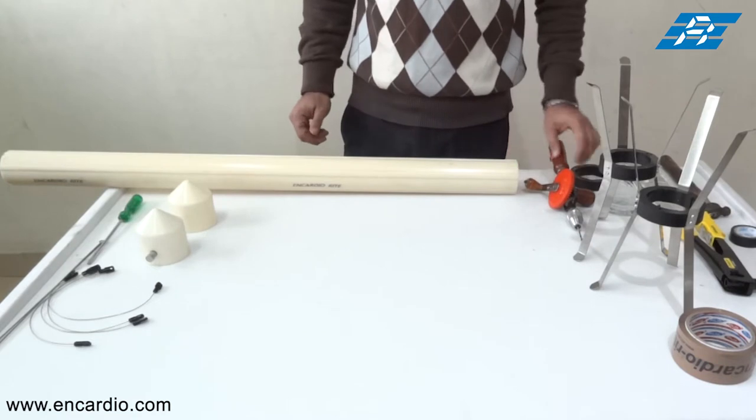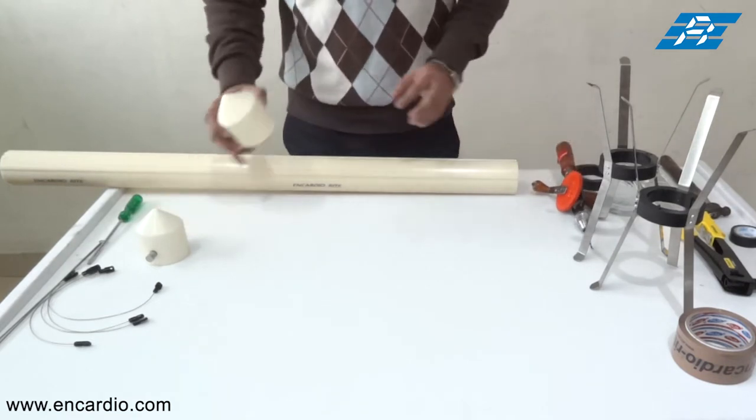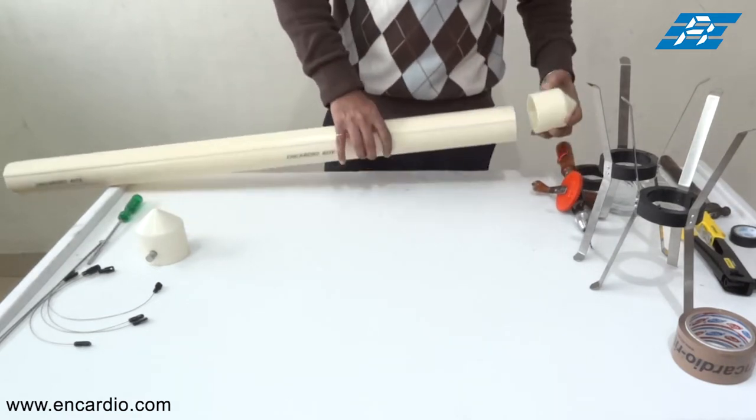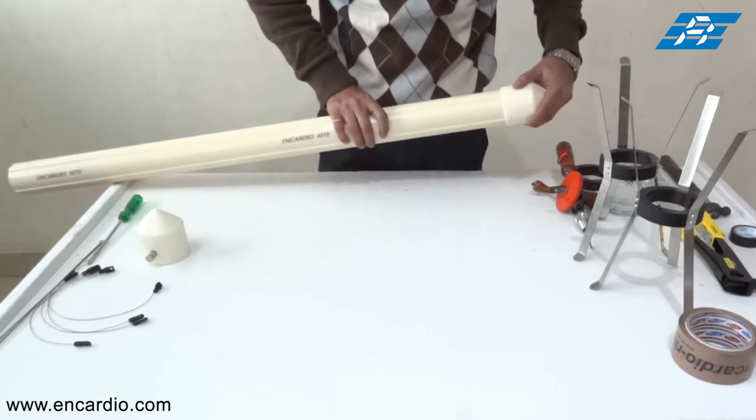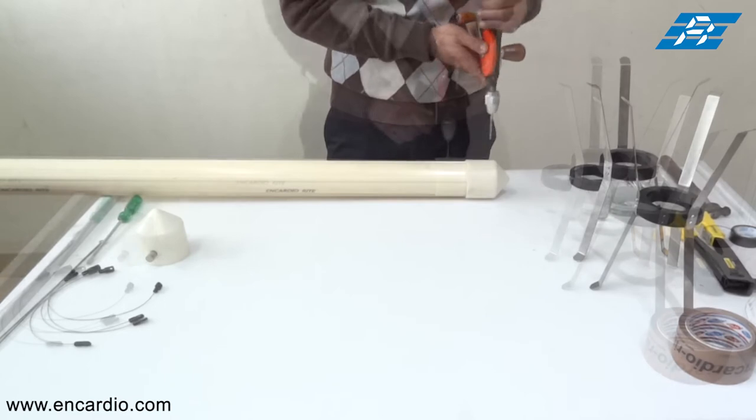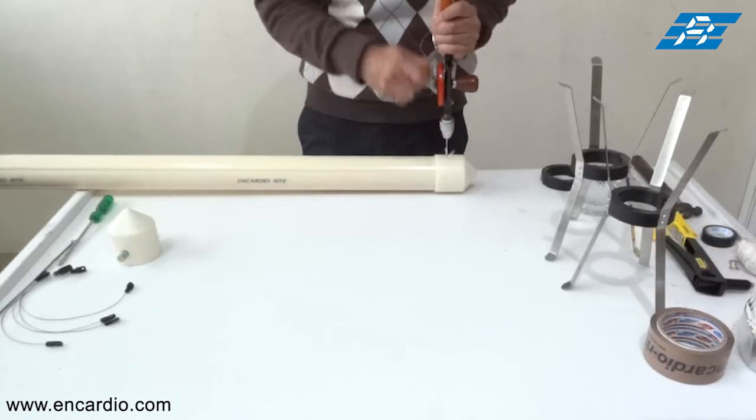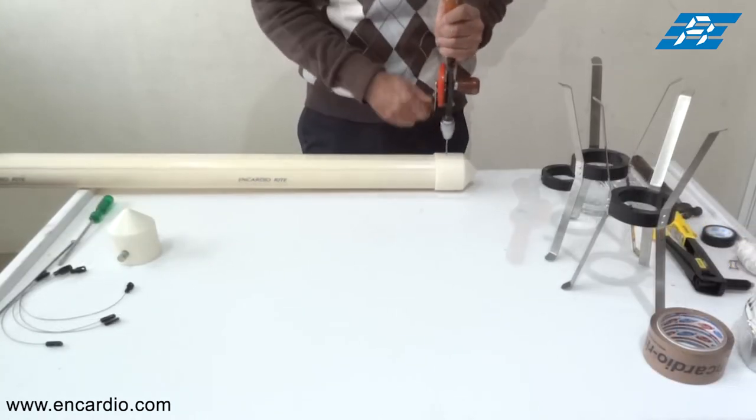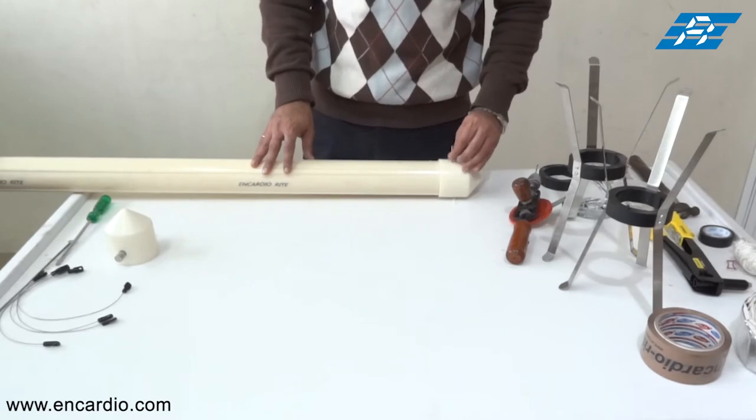First of all we would be installing the bottom cap on the ABS casing by drilling four holes and inserting pop rivet at four locations.